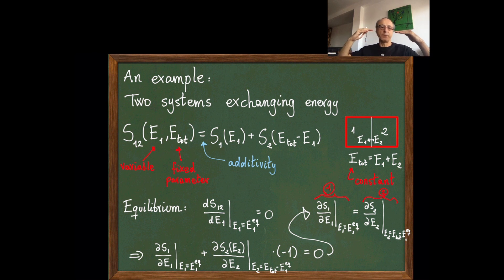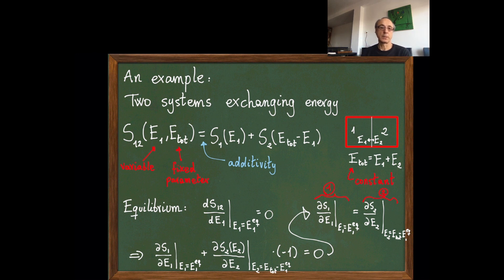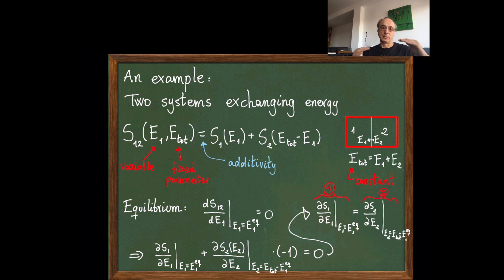If energy flows from system one to system two, then the entropy of two increases and the entropy of one decreases, and the other way around. So whenever you transfer energy from one to two, the entropies decrease and increase. This equation is telling you when this transfer reaches a balance—when the entropy cannot increase if energy flows from one to the other. This derivative tells you how the entropy of a system increases with the energy, and equilibrium is reached when these two derivatives are equal.